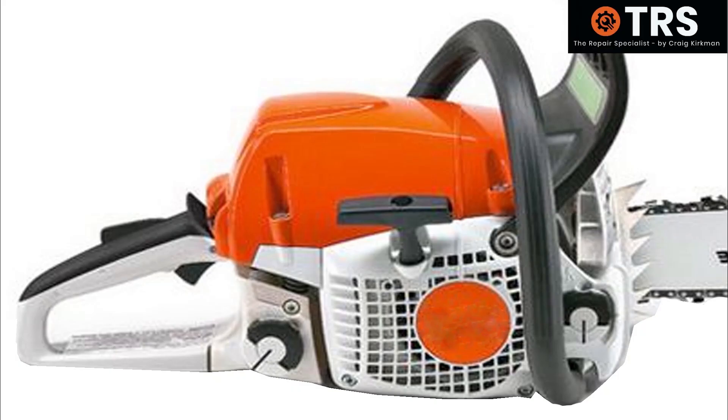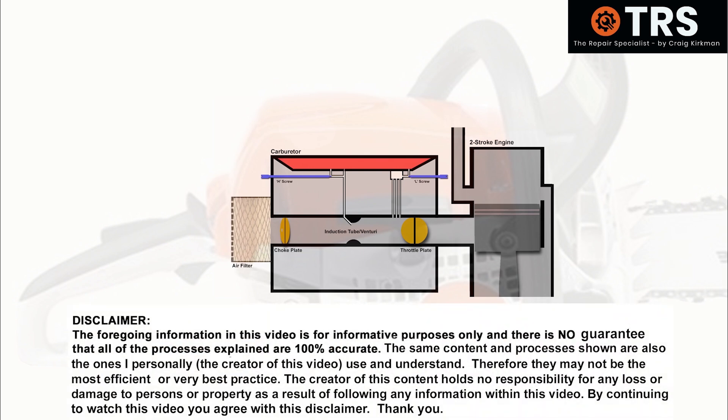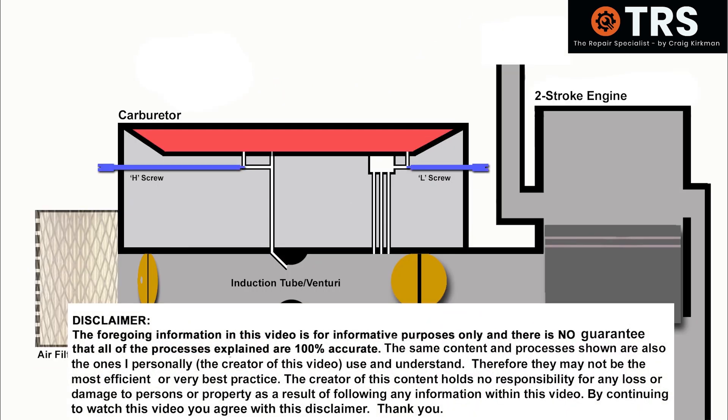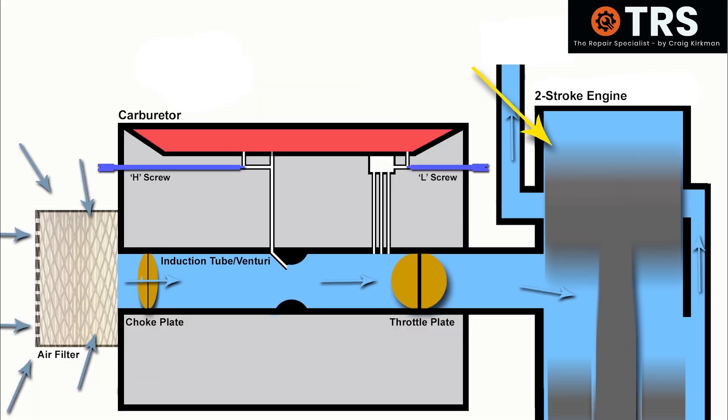So as usual, let's take a look inside this machine at the engine and carburetor. Although I'm showing a chainsaw here, the principles are the same for other two-stroke machinery. As we know, when the engine starts to move, it draws in air through the induction tube of the carburetor. As it passes the main jet, it draws out fuel, hopefully at the right amount to allow for a good ratio between air and fuel for the engine to run optimally.